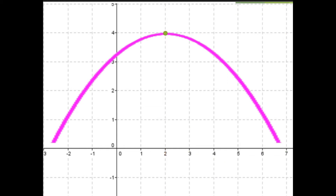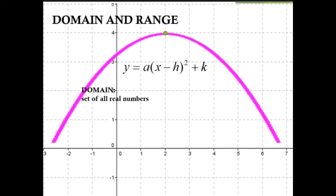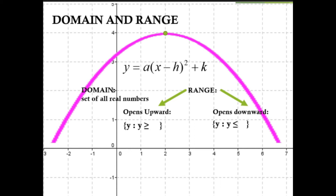The domain of the quadratic function is the set of all real numbers, since we can substitute any value of x. The range depends on the opening: if it opens upward, the range is {y | y ≥ k}; if it opens downward, the range is {y | y ≤ k}. It is important to identify the value of k.